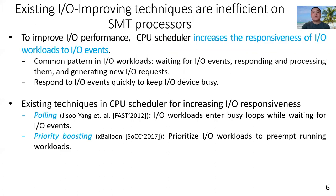Existing CPU schedulers for increasing IO responsiveness employ two techniques: polling and priority boosting. For polling, IO workloads enter busy loops and wait for IO events. For priority boosting, IO workloads are prioritized to preempt running workloads.